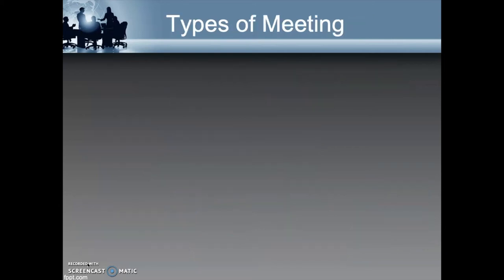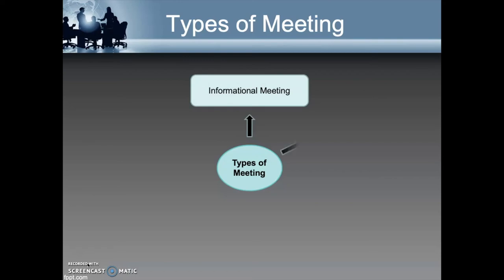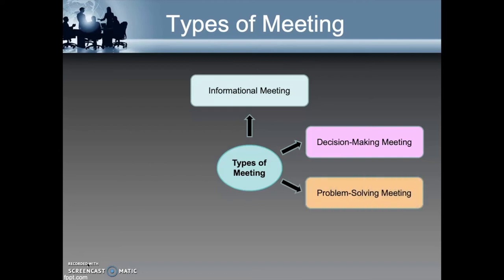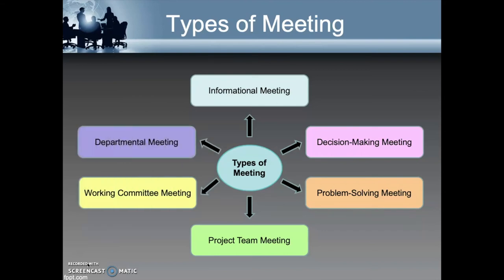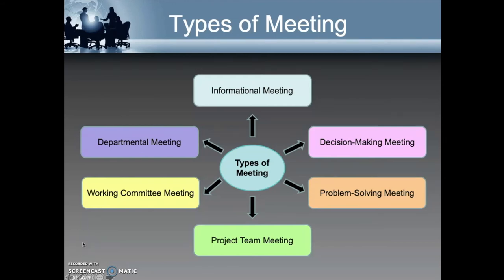On this slide, you will see the different types of meeting. For brevity's sake, I will just briefly present each to you. The first is informational meeting, followed by decision-making meeting, problem-solving meeting, project team meeting, working committee meeting, and finally departmental meeting. Based on the names, you should be able to guess what their purposes are. For more details about these different types of meeting, you can refer to pages 105 to 107 of your textbook.